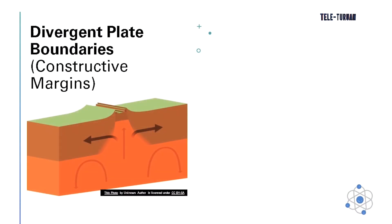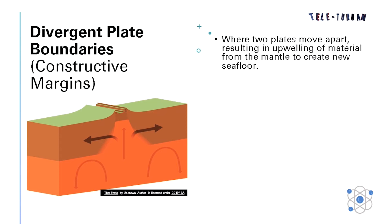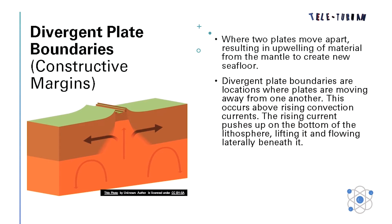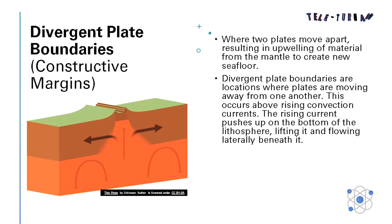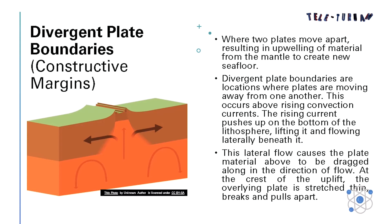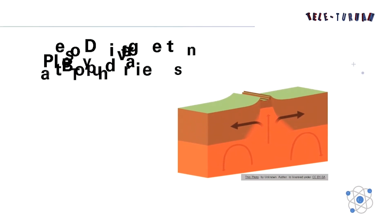Divergent plate boundaries are known as constructive margins, where two plates move apart, resulting in upwelling of material from the mantle to create new seafloor. They are locations where plates are moving away from one another. This occurs above rising convection currents. The rising current pushes up on the bottom of the lithosphere, lifting it and flowing laterally beneath it. This lateral flow causes the plate material above to be dragged along in the direction of flow. At the crest of the uplift, the overlying plate is stretched, breaks, and is pulled apart.